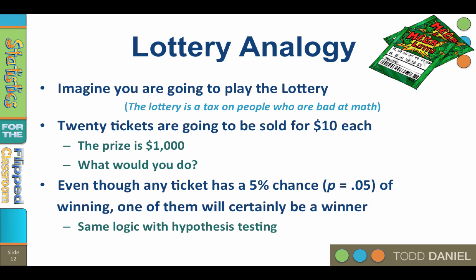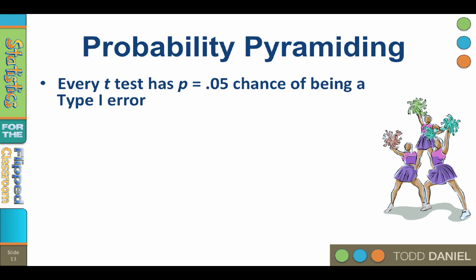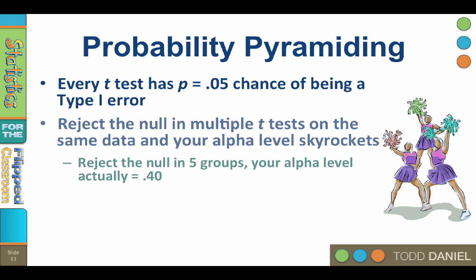If you hold all 20 tickets, you will spend $200, but one of them will certainly be a winner and you will win $1,000, although you will not know ahead of time which one will be the winner. The point is that this same logic applies with hypothesis testing. Every t-test has a P = .05 chance of being a type 1 error — of erroneously finding a difference where none exists. For any single t-test, you have a 5% chance of being wrong. But if you keep running t-tests on the same data, one of them is going to be a type 1 error, just like that lottery. And you don't have to run 20 t-tests to have this problem.